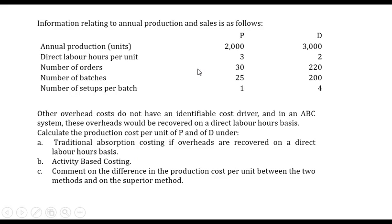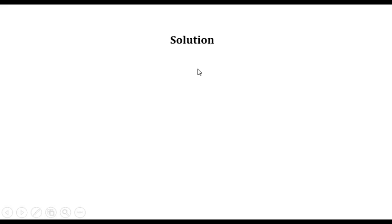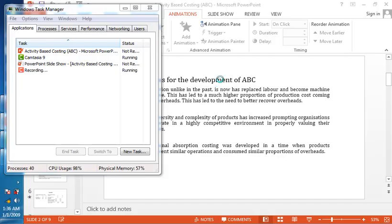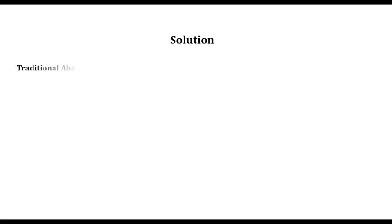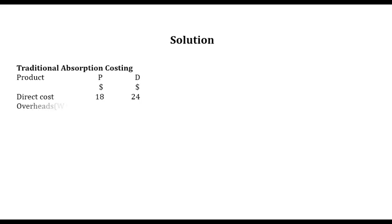So we go to the solution. Let's start with the traditional absorption costing system. Products P and Q, in dollars: we have direct cost $18 and $24. Then we have overheads $90 and $60. Let's see how we obtain these.